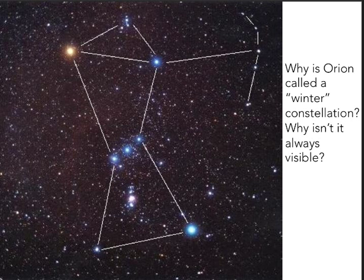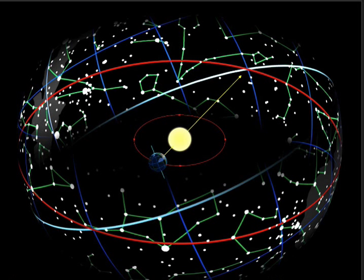Orion is my favorite constellation, but I can't see it in the night sky all year. In fact, Orion is called a winter constellation, which means it's visible in the early evening during the winter. The first consequence of yearly motion is that we don't always see the same set of stars over the course of the year. Stars rise and set over the course of a day due to Earth's rotation, but the stars that are rising and setting on any given day also change over the course of a year — that's a consequence of Earth's revolution around the Sun.